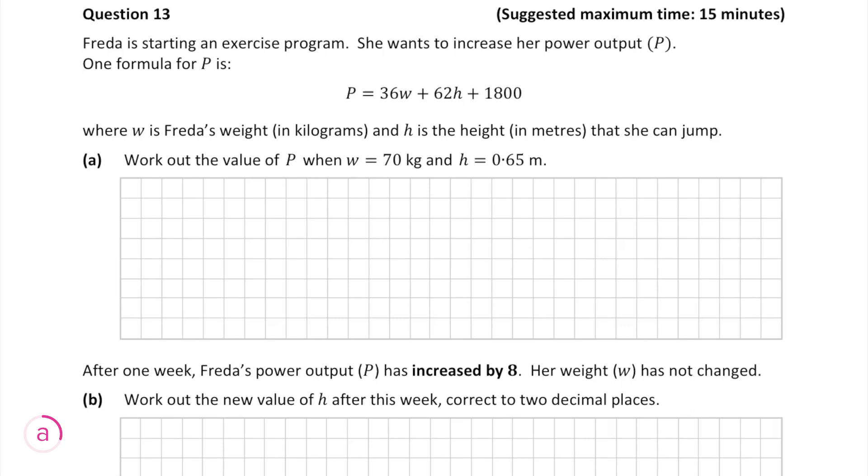In part a, we have to work out the value of p when w is equal to 70 and h is equal to 0.65. To do this, we just fill these values into the formula.